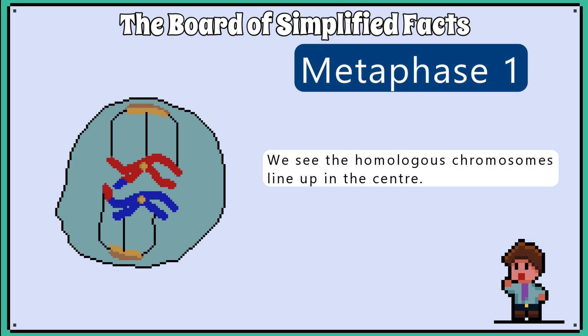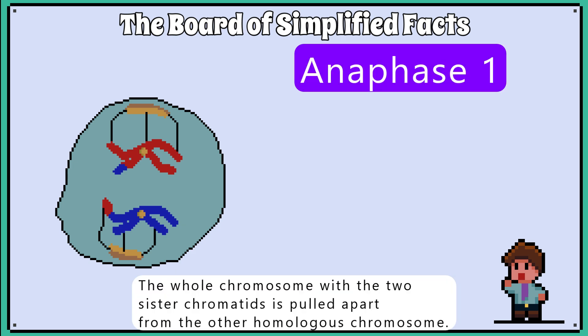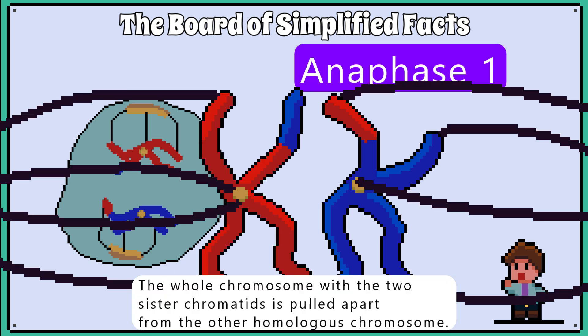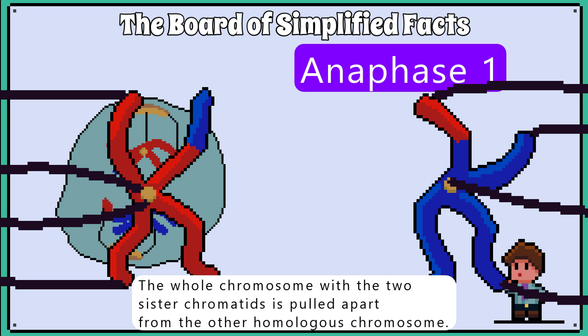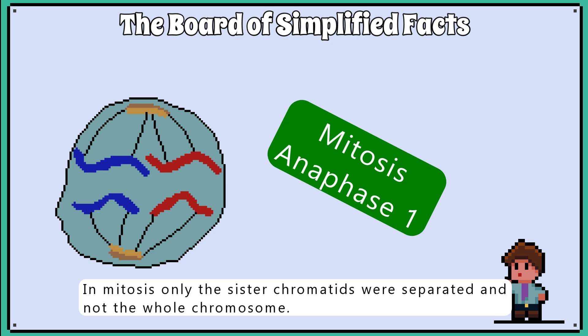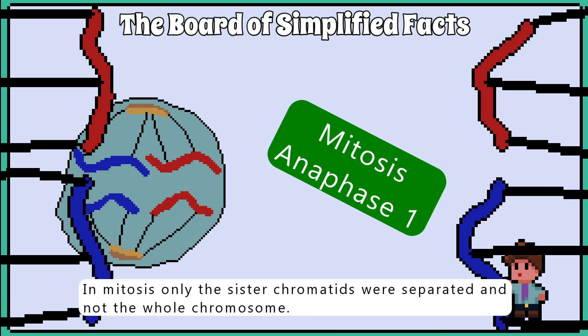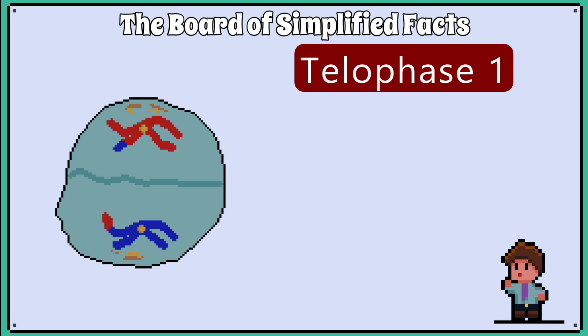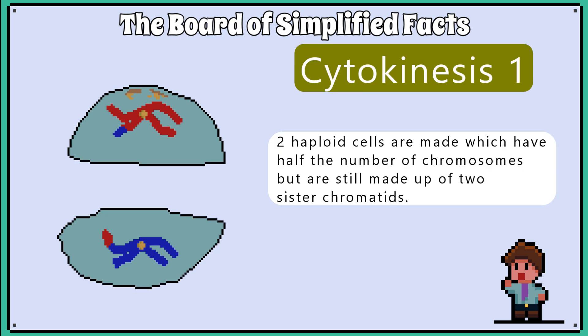In metaphase 1, we see the homologous chromosomes line up, like in mitosis, but during anaphase 1, when they get pulled apart, the whole chromosome with the two sister chromatids is pulled apart from the homologous chromosome. In mitosis, only the sister chromatids were separated, not the whole chromosome. So after cytokinesis 1, we have cells that contain half the number of chromosomes, but they are still made up of two sister chromatids.